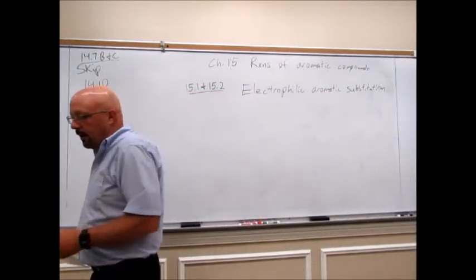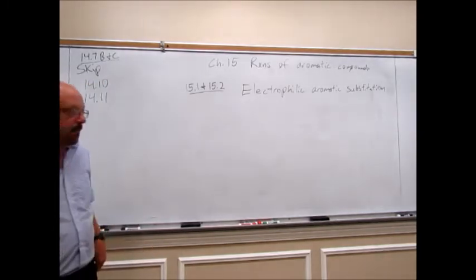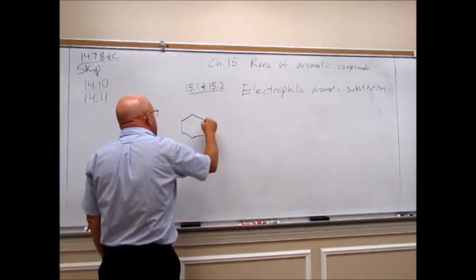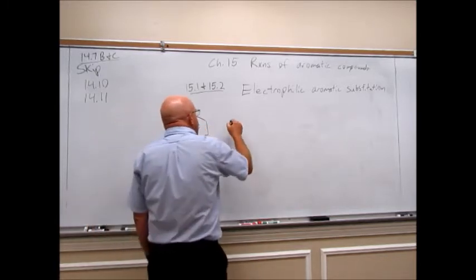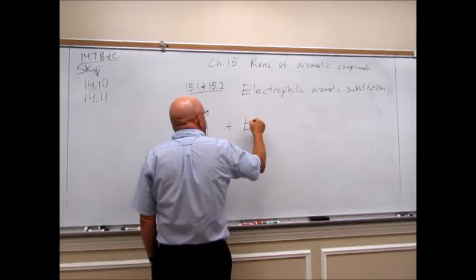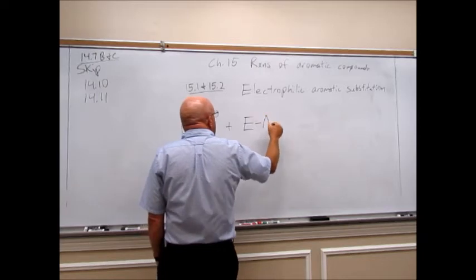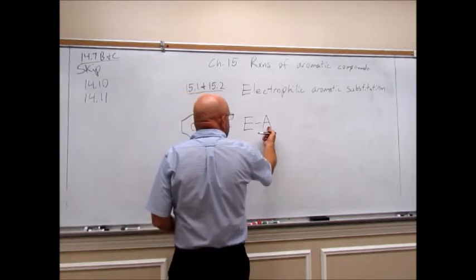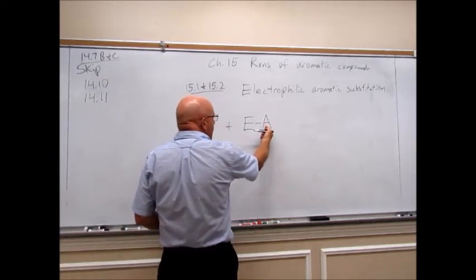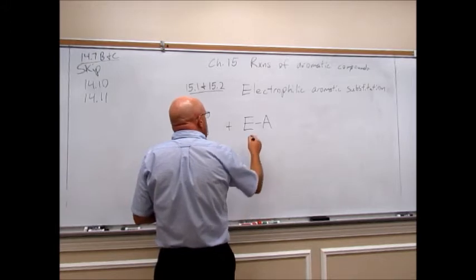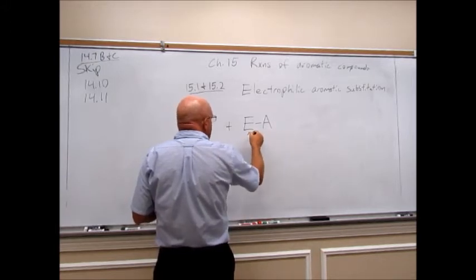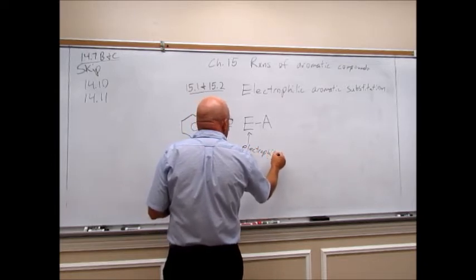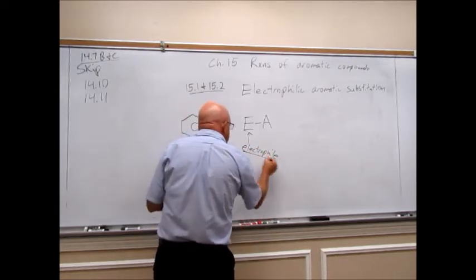I'm going to go generic here to start with and then we'll go through specific examples. We are going to take an aromatic ring and react it with some electrophile — I'll put an E for the electrophile — and it would have something out there to balance the charge. I'll put an A for an anion that's out there.